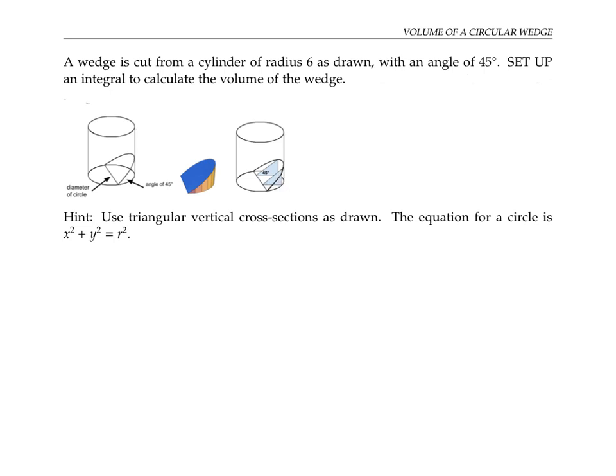We can think of the wedge as a solid whose base is a semicircle and whose cross-sections are triangles. Since the cylinder has radius 6, we can think of the semicircle as having the equation x-squared plus y-squared equals 6-squared, or 36.